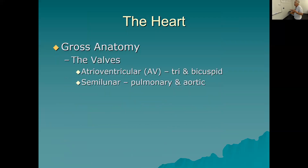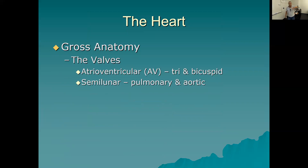To review the valves: the atrioventricular valves are the tricuspid (between the right atrium and right ventricle) and the bicuspid or mitral valve (between the left atrium and left ventricle). The semilunar valves are the pulmonary and aortic semilunar valves.